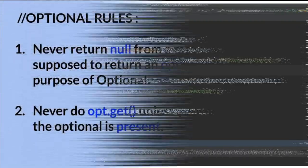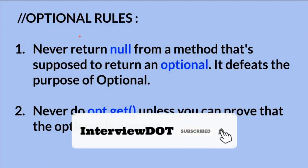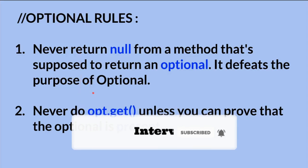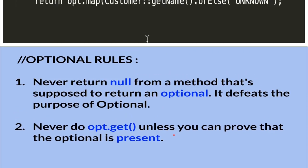Whenever you use Optional in your code, please remember these two rules. First, never return null from a method that's supposed to return an Optional, because it defeats the purpose of Optional. Second, never call opt.get() unless you can prove that the Optional is present, because if the element is not available it will throw NoSuchElementException.